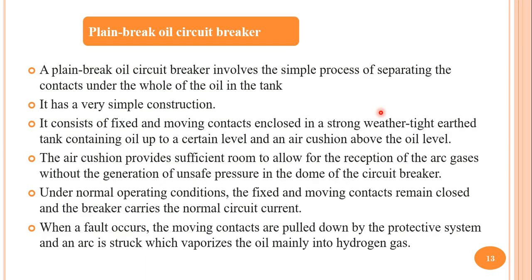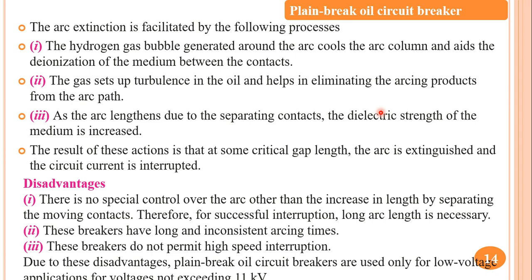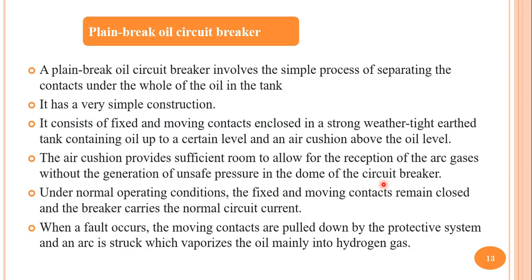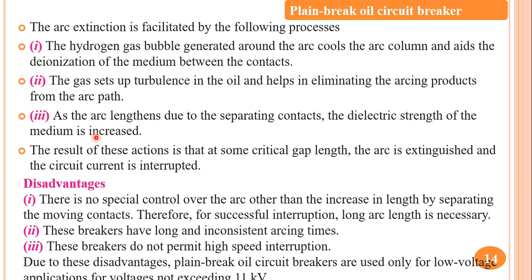In the plain break oil circuit breaker, arc extinction is mainly done by increasing the length of the arc — as the moving contact is moved from the fixed contact, the length of the arc increases. An air cushion is provided for accommodating the hydrogen gas. These breakers have long and inconsistent arcing time depending on the current and the length of the arc, so arcing time is inconsistent.